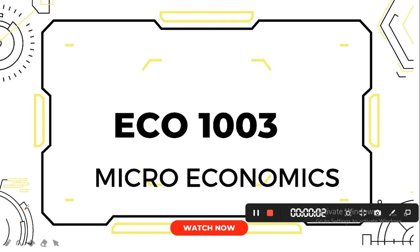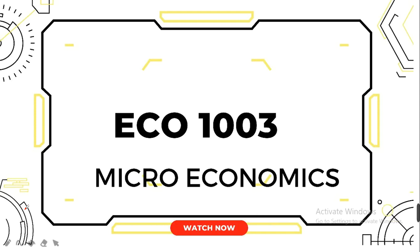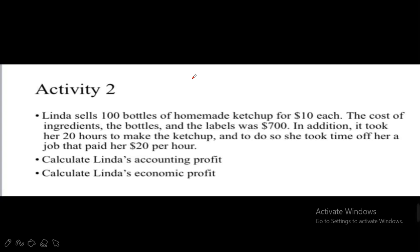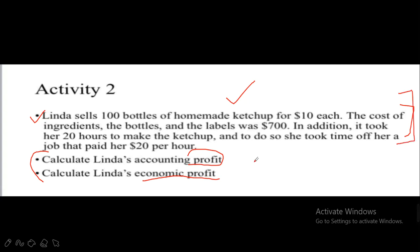Hello everyone, welcome. In today's video session we are going to discuss a very important question of microeconomics — Economics 103. This video session is being recorded for HCT College, United Arab Emirates. This is a very popular question of microeconomics. There are two sub-parts: the first is asking for accounting profit and the second is asking for economic profit.